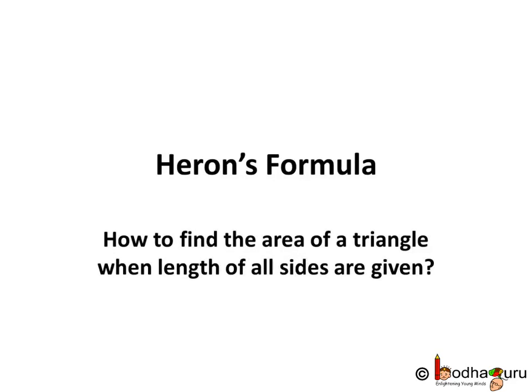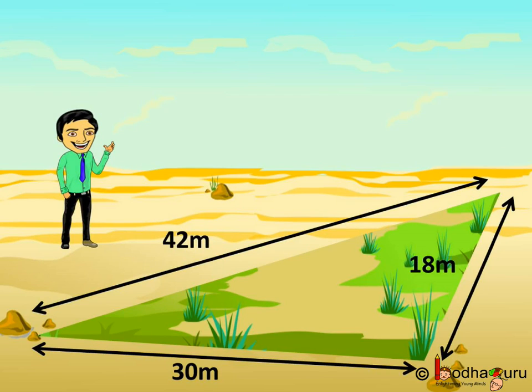Imagine you have earned and saved lots of money to buy land, and finally you could buy it. It's a triangular piece of land with known lengths of the three sides. But how to calculate and verify the area?